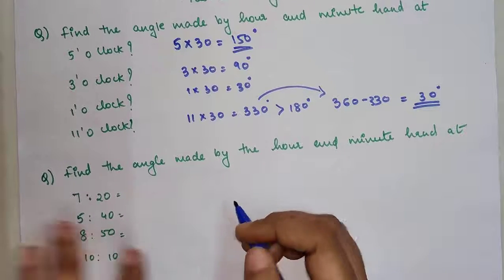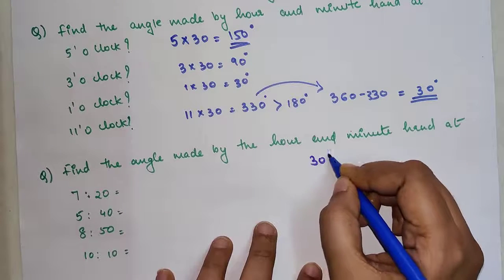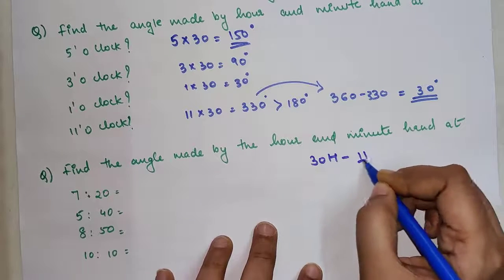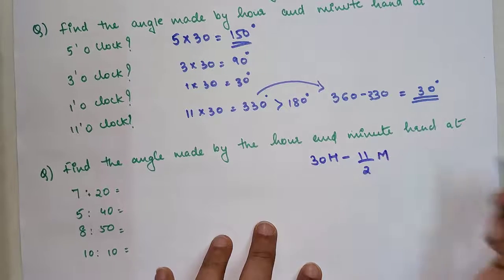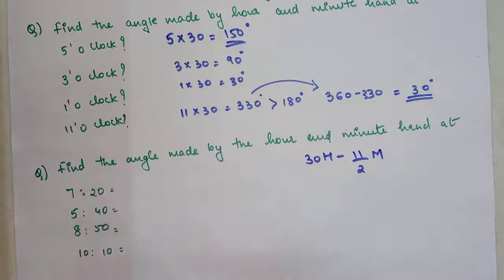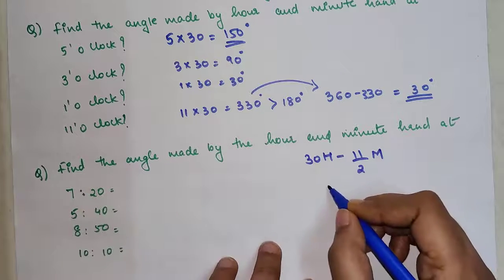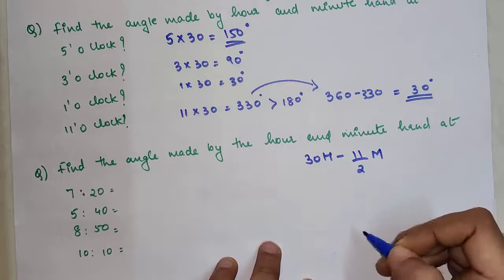So now over here, see what is your formula. Your formula is nothing but 30H minus 11 upon 2 M. I know it is a bit tricky to remember, so how I could remember this is basically first is your hours, and then next is your minutes.